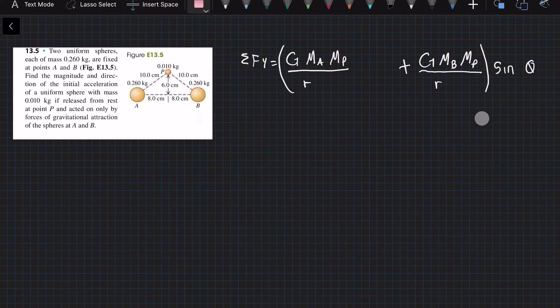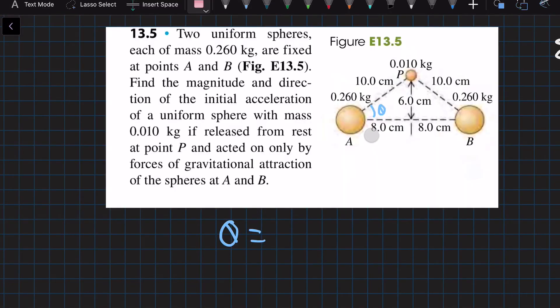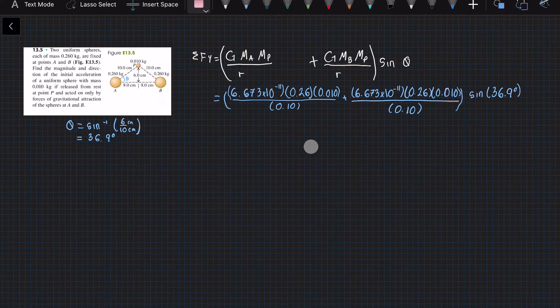We will be trying to find this angle right here, so we're going to do sine inverse of 6 by 10, and that will give us an angle of 36.9 degrees, which is the angle that we're going to use. After we plug in numbers, the only thing that we need to watch out for would be the radius.